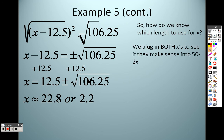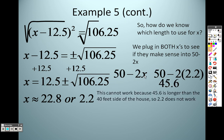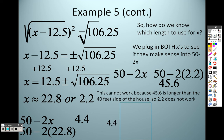So how do we know which length to use? Well, we plug in both to see if they make sense, and here's what I mean. Plug in 22.8 into this. Plug in 2.2, I end up getting 45.6. This can't work because 45.6 is longer than the 40 feet side of the house, so 2.2 doesn't work. It can't be longer than the side of the house or it won't make any sense. So we can't put 2.2 in there because it's longer than the house is, which means the garden's bigger and won't even fit in my yard. However, if I put a length of 22.8 in there, I end up getting 4.4 as the one length. So I get 4.4 and 22.8, which actually fits for the length of the house.